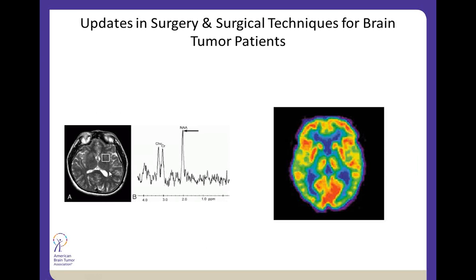An example here is an axial T2 MRI where they blocked out a sequence and performed spectroscopy. You can compare normal brain to lesional brain, and based on the different molecules within that lesion, you can get a sense of whether it is an active tumor, dead tumor, or infection. A PET scan can give you similar information — this uses CT technology, while MR spectroscopy uses MRI technology.